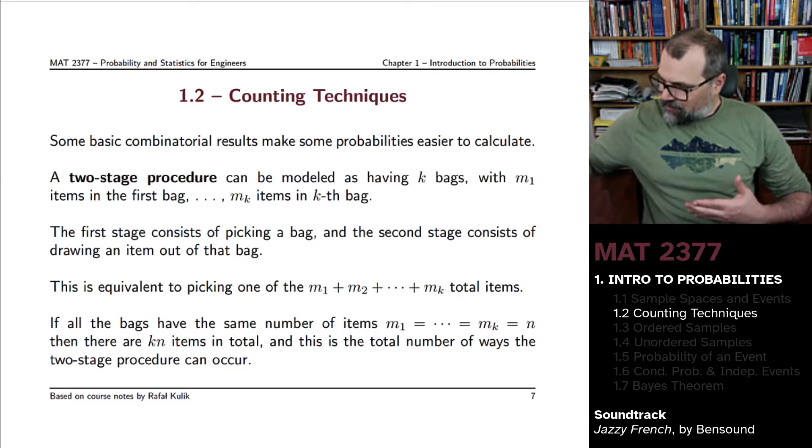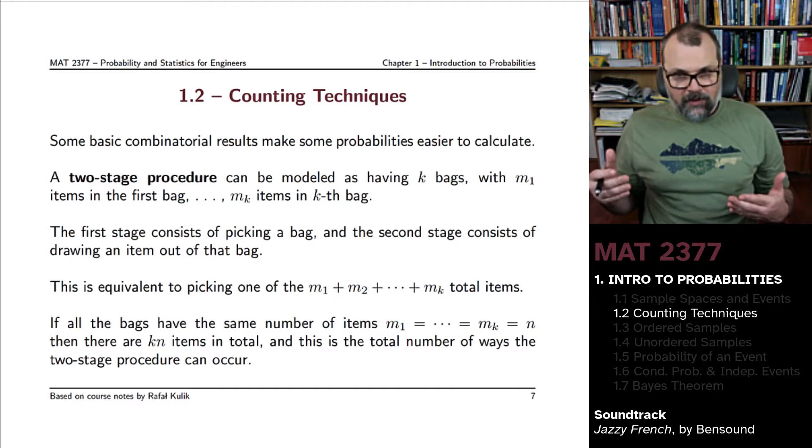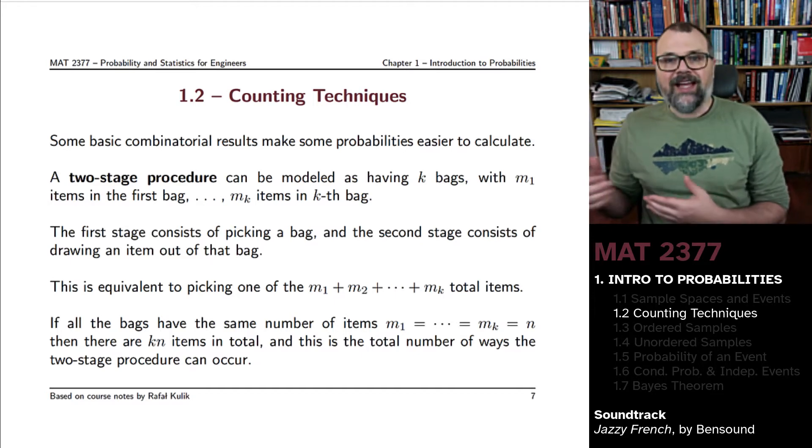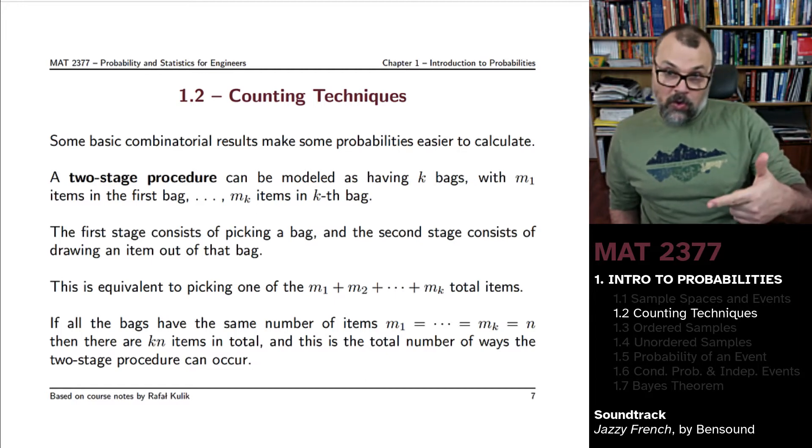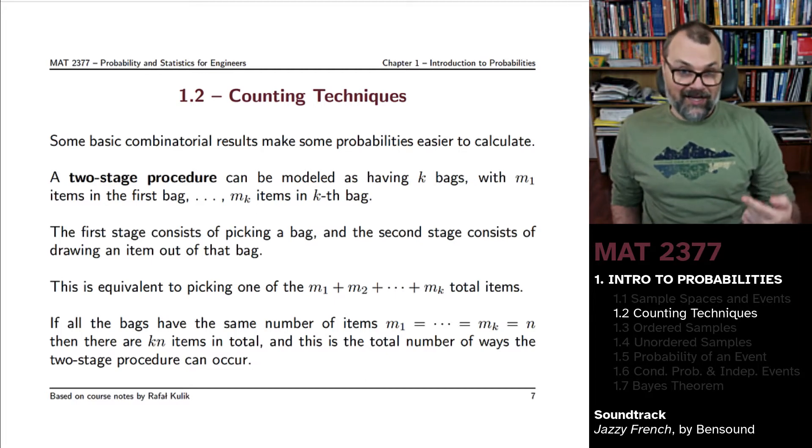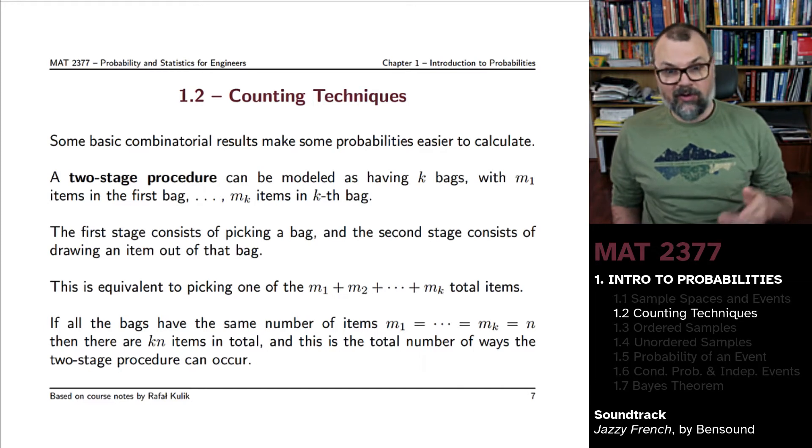But when you're looking at experiments that have a lot of potential outcomes, and then you're going to run experiments in sequence, you might have a lot of different combinations of outcomes, like high scratch resistance, low shock resistance, high scratch resistance, high shock resistance, and so forth. There's only four outcomes. That's not too complicated.